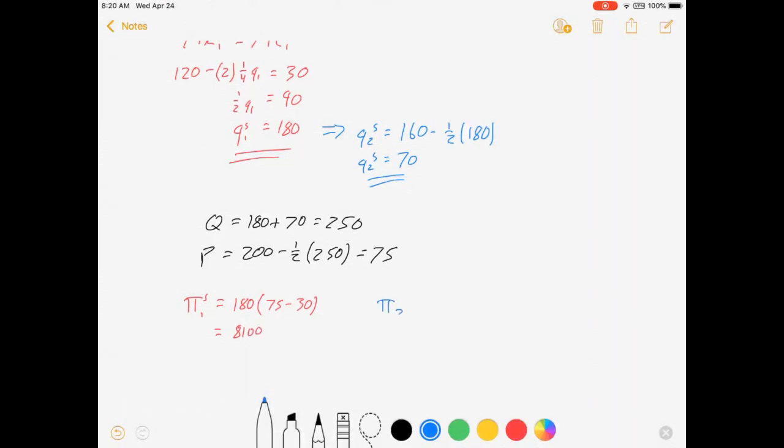For firm two, profit is equal to the quantity times the price, minus the average total cost, which comes out to 2450. So there's Stackelberg in a nutshell. So we solve for quantities, prices, and profits.